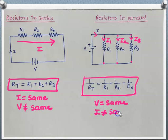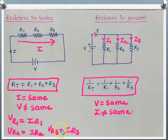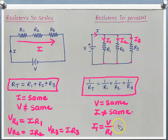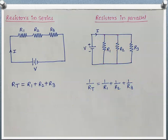In series, voltage is different across each resistor: VR1 = I × R1, VR2 = I × R2, VR3 = I × R3. In parallel, current through each branch is different: I1 = V/R1, I2 = V/R2, I3 = V/R3. In this way the voltages and currents for each element in series and parallel circuits can be calculated. Let's now solve some problems based on this topic.